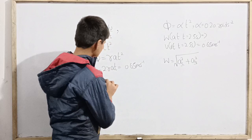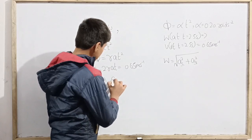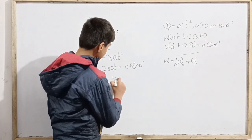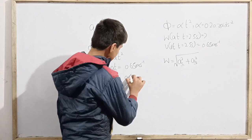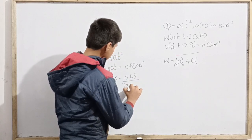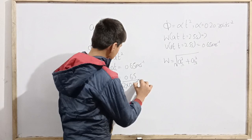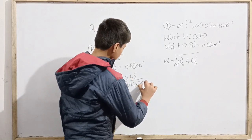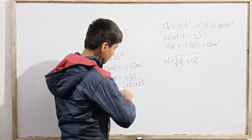From here we'll find the value of r, that is 0.65 over 2 into a, which is 0.2, into again t value is 2.5. This digit 1 will be 1.